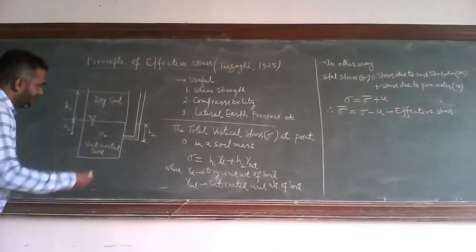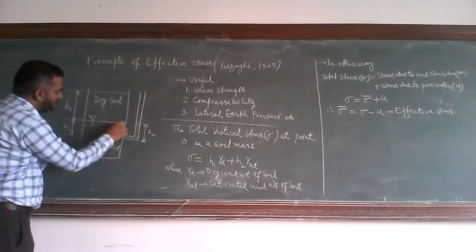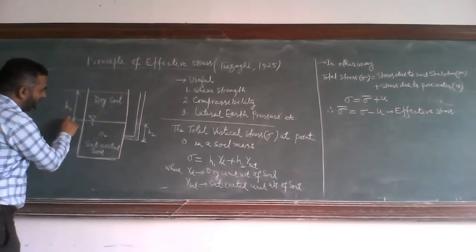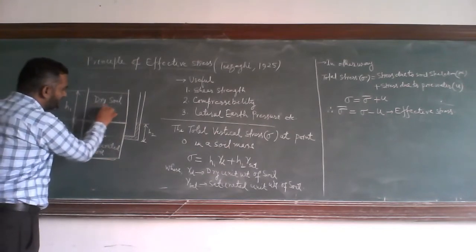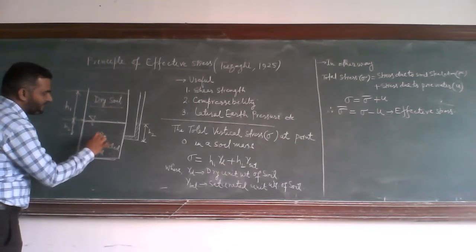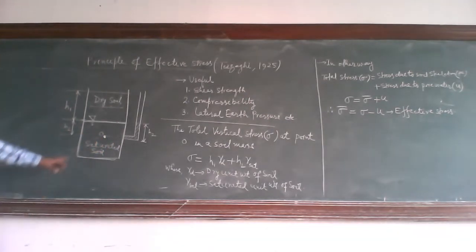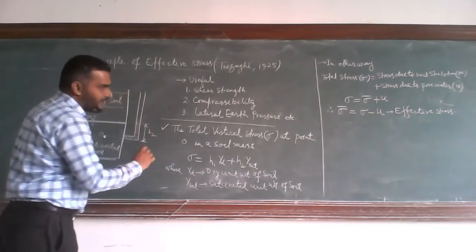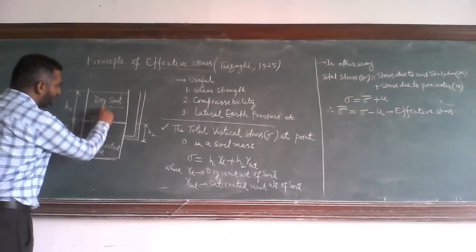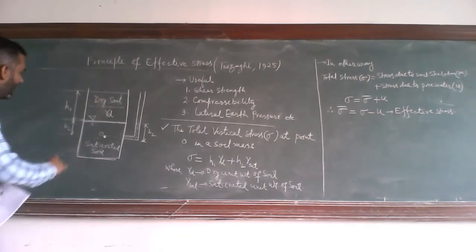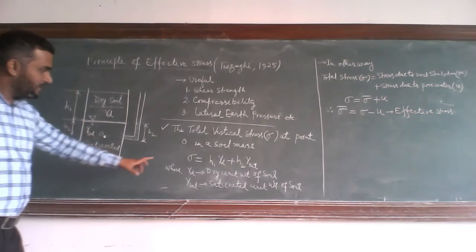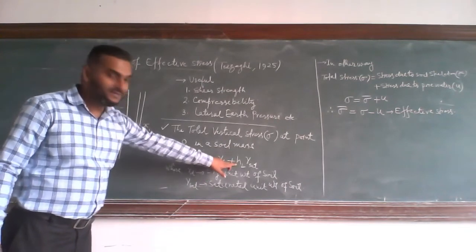Consider a case where we have a soil sample. Suppose this is the soil sample. If the water table is at this level, the soil is dry in the upper part and saturated in the lower part. If we want to calculate the stresses developed at a point O, the total vertical stress sigma at point O will be equal to H1 times gamma-D plus H2 times gamma-saturated.